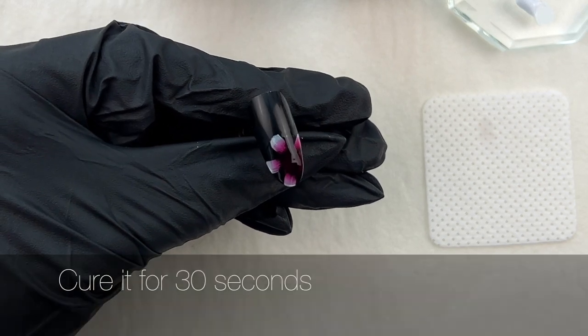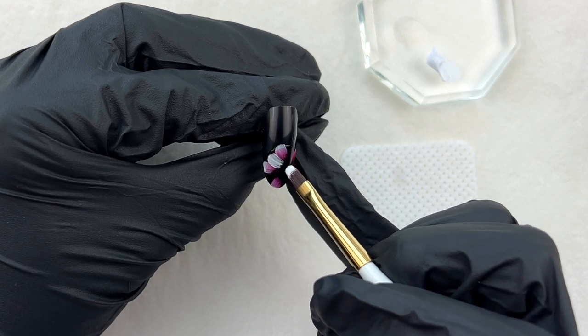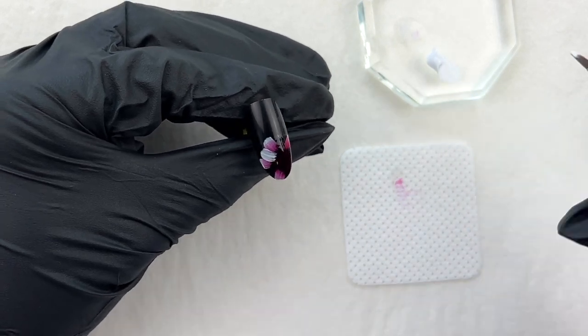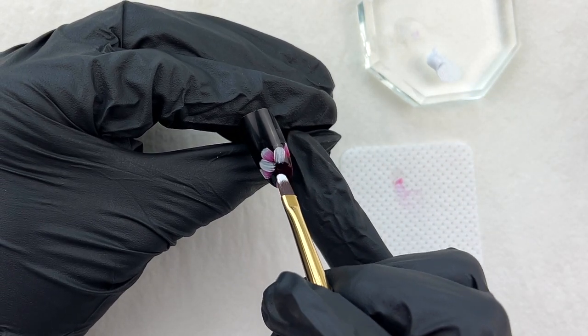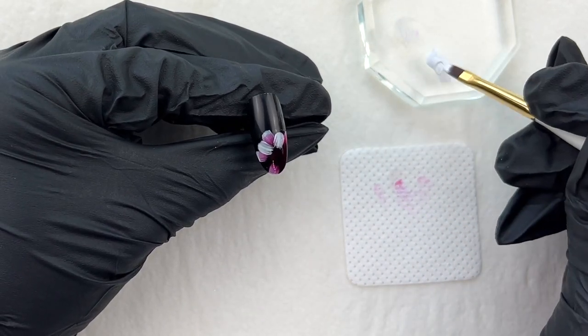Then cure it for 30 seconds. Repeat it for the second layer of the flower. Now there is an inhibition layer of the red gel polish, so I remove the red gel polish on the brush as I kept drawing the petals.